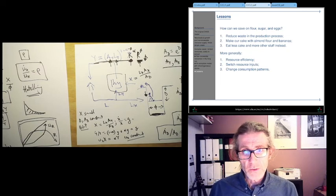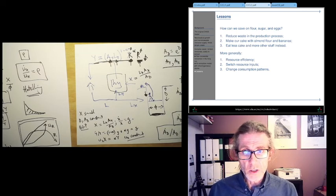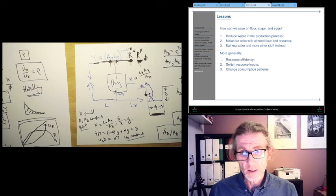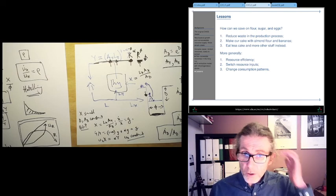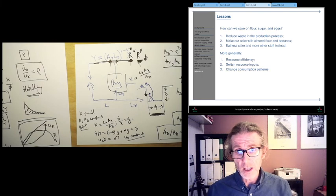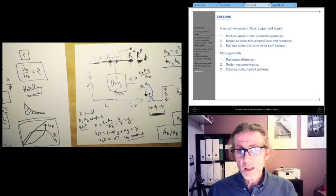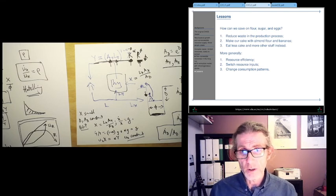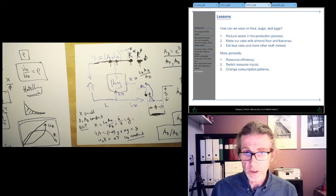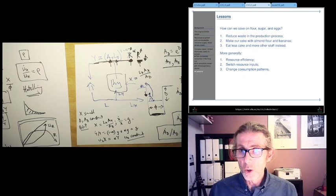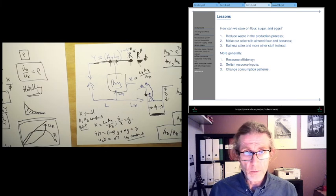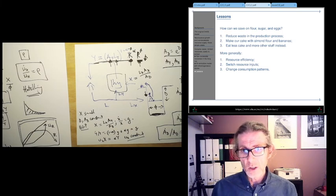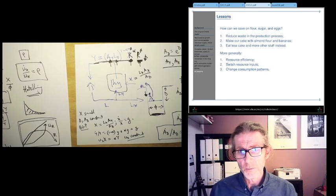So how can we save on flour, sugar, and eggs? We can reduce waste in the production process. We can get more efficient in the use of flour, sugar, and eggs. We could make our cake with almond flour and bananas, so we could use other inputs instead and still make cake. If the flour, sugar, and eggs are running out, maybe we can find some other ingredients. Or we could just eat less cake and make more other stuff instead. We could shift the pattern of our production and consumption.